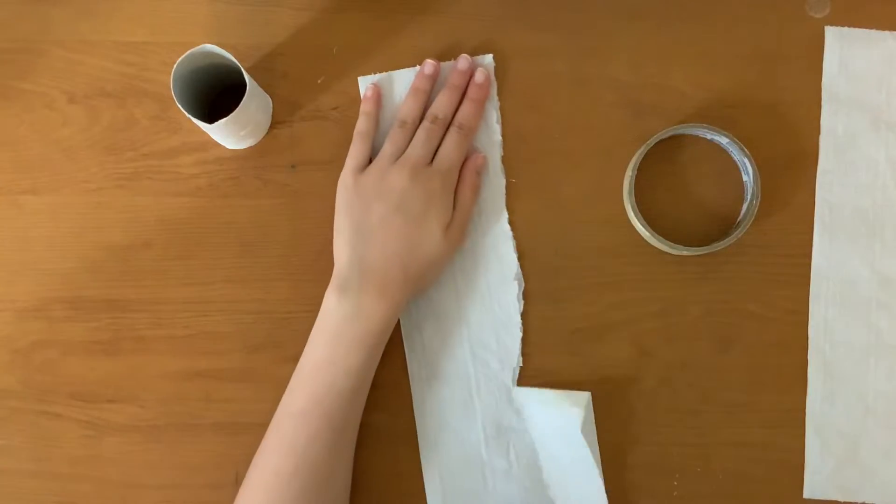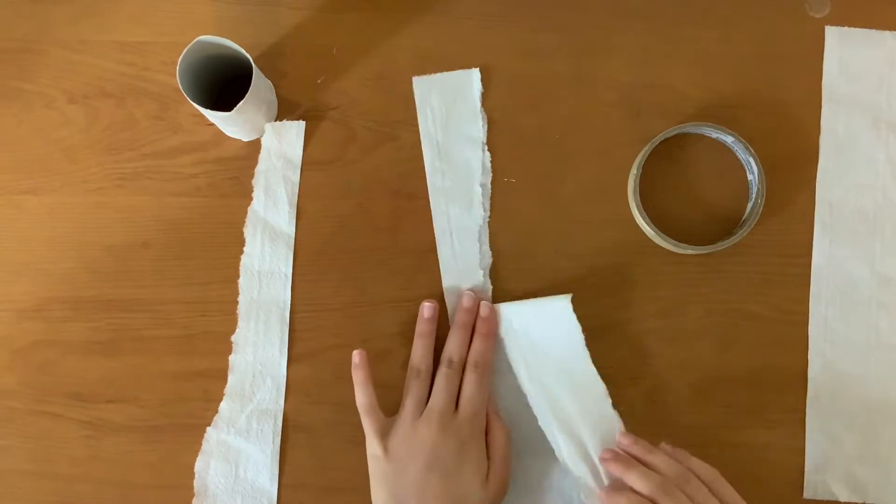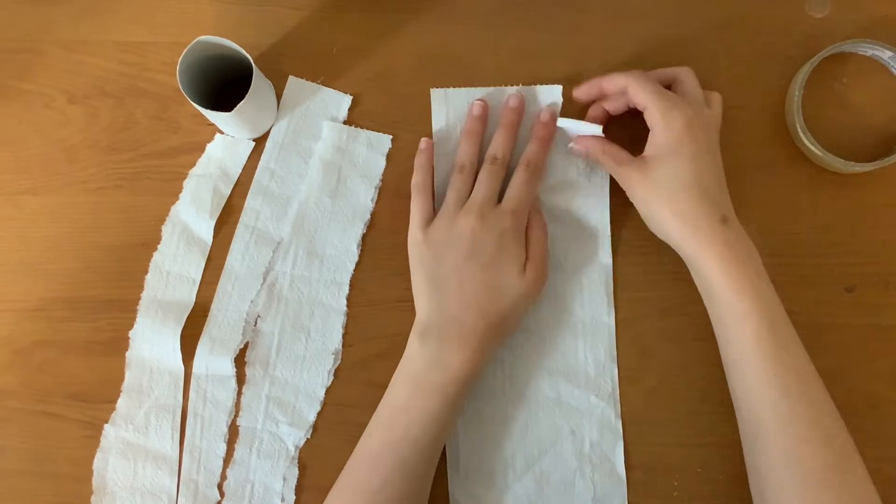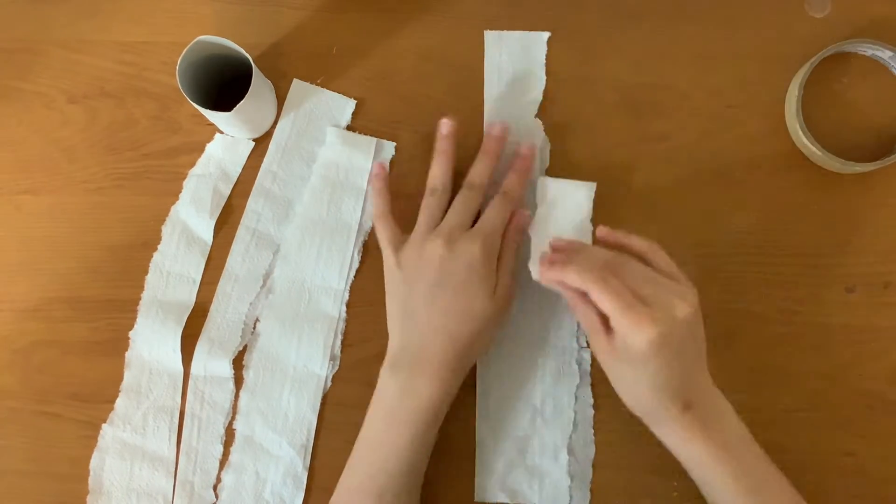So we'll take a few strips of your toilet paper roll. Try to rip them into thinner strips like so. I will be ripping my toilet paper into six strips. You just need enough to fill the inside of your toilet paper roll.